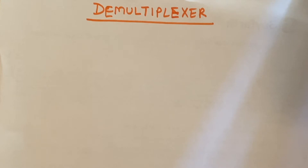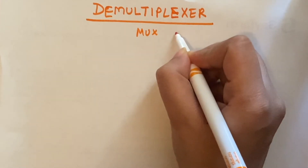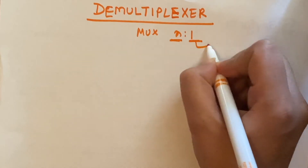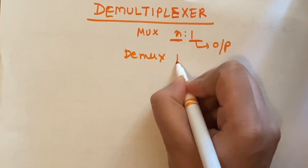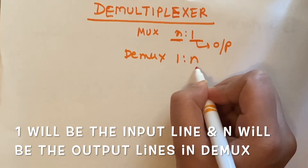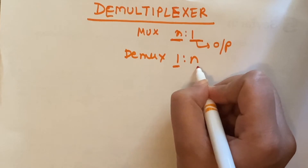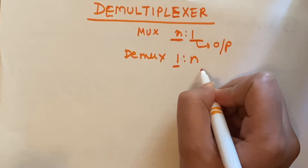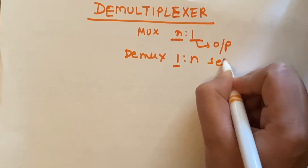In a multiplexer, one output is selected from several inputs by the help of the selection line. A multiplexer is N-to-1, where N is the number of inputs and one is the number of outputs. In a DEMUX it is 1-to-N, meaning one is the input and N is the number of output lines. The input will be transferred to any one of these N output lines — not all at a time — just a single output line, by the help of the selection line.